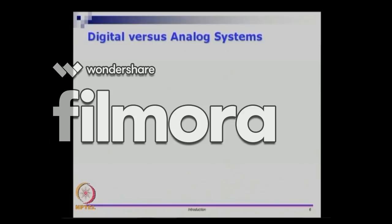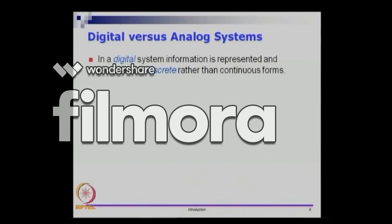Let us take a small look at what a digital system is as opposed to what an analog system is. In a digital system, information is represented in some discrete form rather than continuous form. In some sense, the discrete nature means we will look at logic values 0 and 1, as opposed to a voltage which is 0 volts to 5 volts or any range in between. We will usually stick to two values, 0 and 1 — that is a form of discretization.